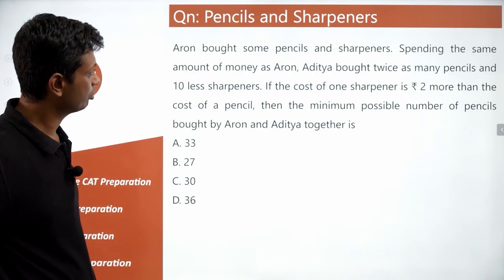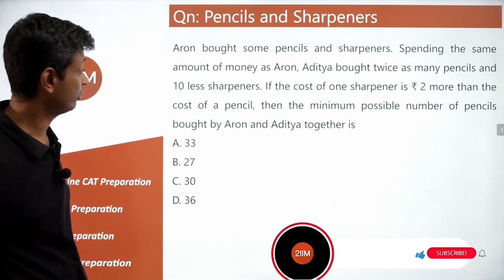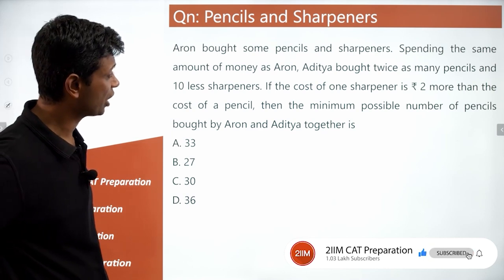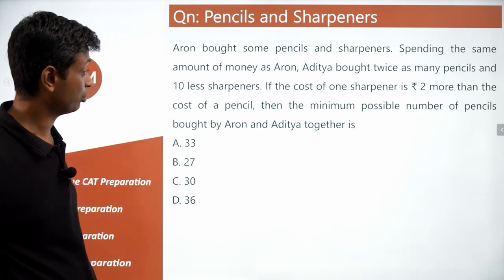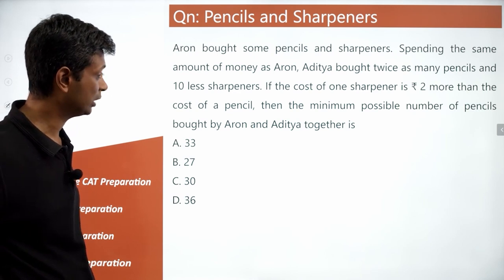Aaron bought some pencils and sharpeners. Spending the same amount of money as Aaron, Aditya bought twice as many pencils and 10 fewer sharpeners. With the cost of one sharpener being rupees 2 more than the cost of a pencil, find the minimum possible number of pencils bought by Aaron and Aditya together.